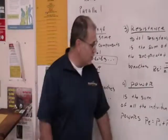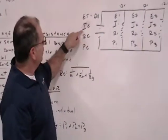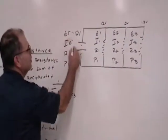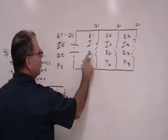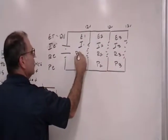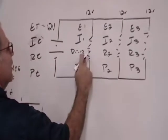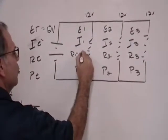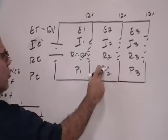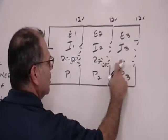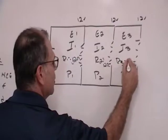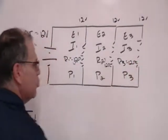So if we come over here and we look at the total current, let's assume that we have this 12 volts. And we're going to say that the value of the resistor, we'll keep it simple. We'll say 12 ohms. So each one of these resistors is 12 ohms.